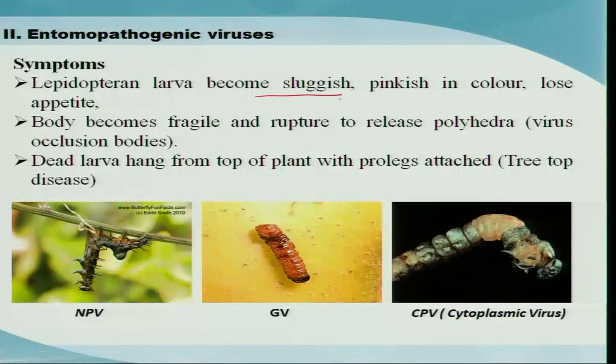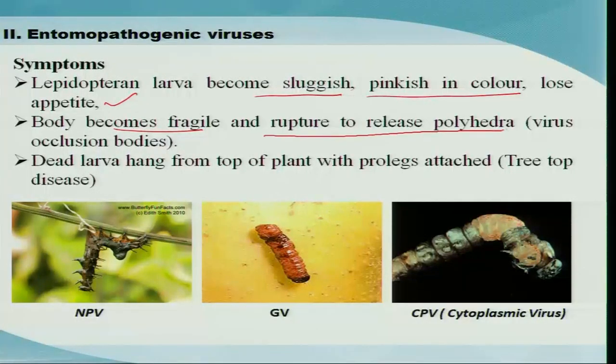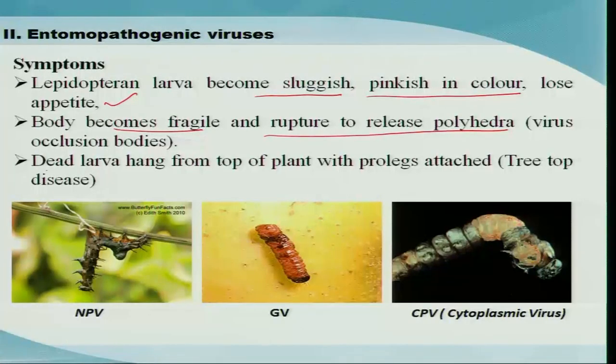Some symptoms of entomopathogenic virus infection include the larvae becoming sluggish, sometimes changing color to pinkish, and losing appetite. The body becomes very fragile and ruptures to release polyhedral bodies. The whole body contains polyhedral bodies and becomes quite soft — even with a slight mechanical disturbance, the body will rupture and the polyhedral bodies will be released.